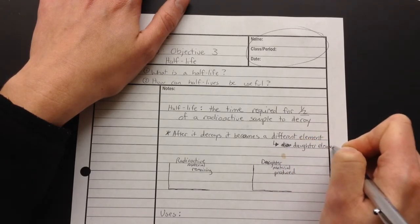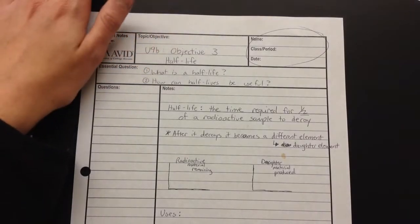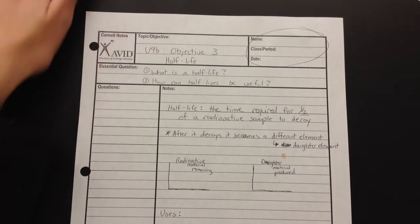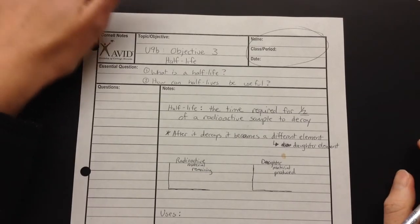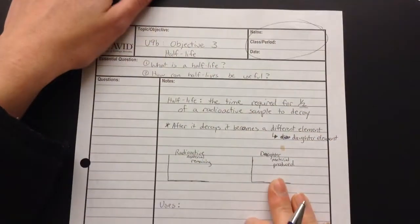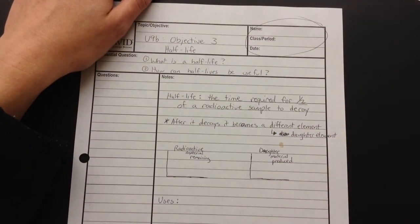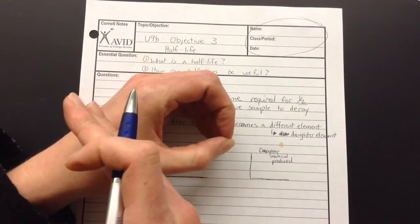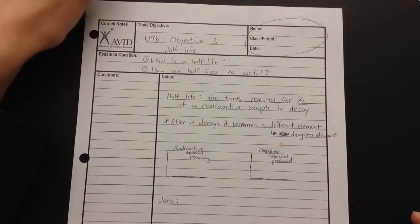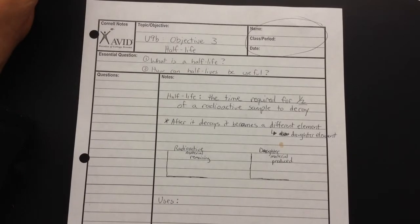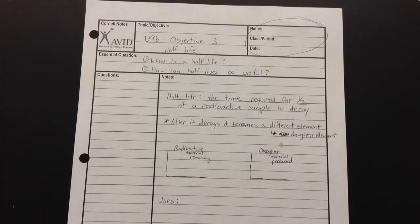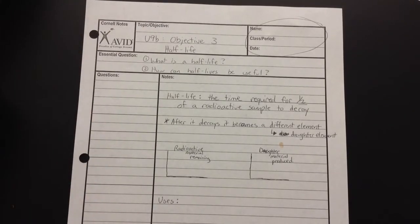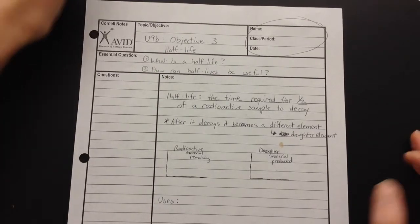So uranium-238 turns into thorium via some kind of decay, alpha decay. And so it turns into a new element over time. So we might still have a chunk here, but this is going to be a different element after that half-life. Now we can't predict which ones are going to do it or when it's going to happen, but we can know how much time it takes for half of it to decay.